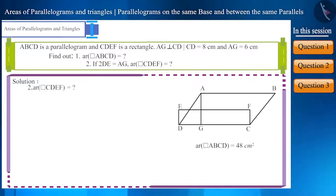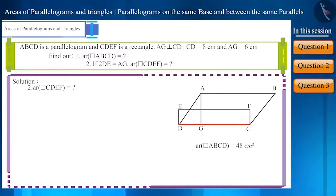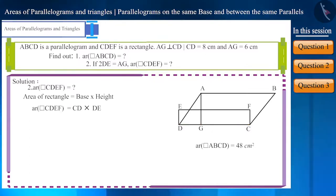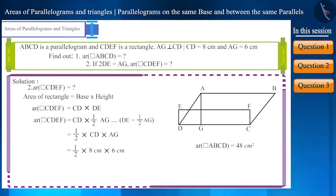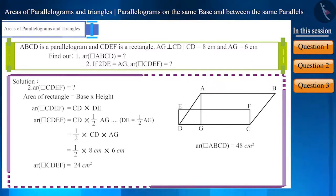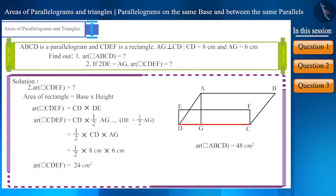Now for the second part: find the area of rectangle CDEF, where CD is the base and DE is the height, and we are given that 2DE equals AG. Instead of DE, we can write one-half of AG. Solving the values, we get the area as 24cm². The area of the rectangle is half the area of the parallelogram, because despite having equal bases, the height of the rectangle is half the height of the parallelogram.